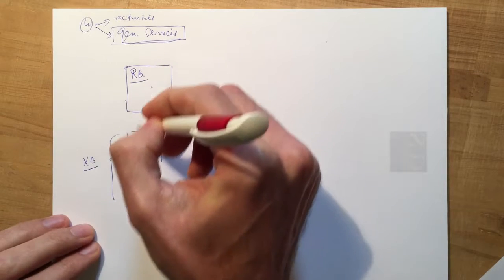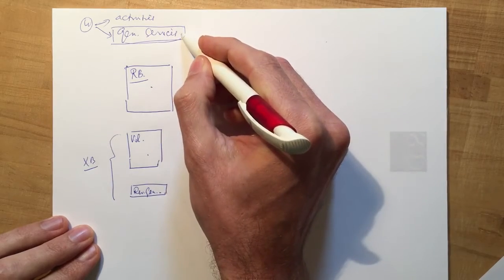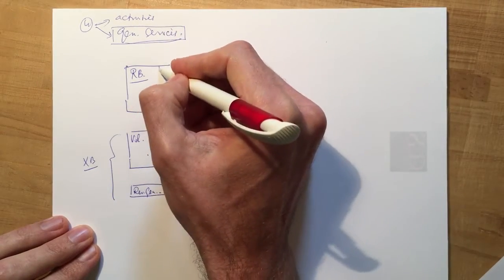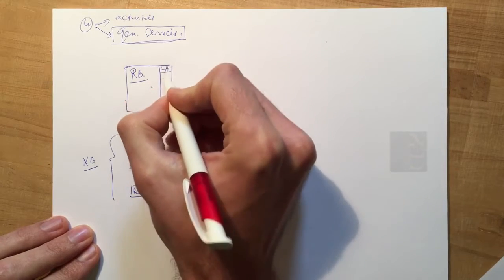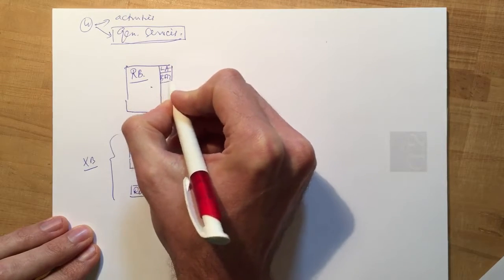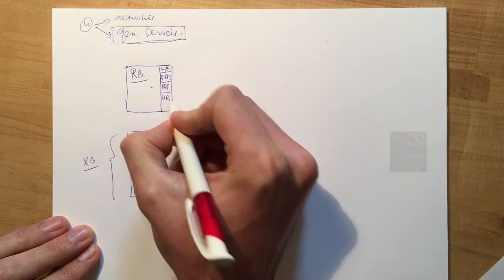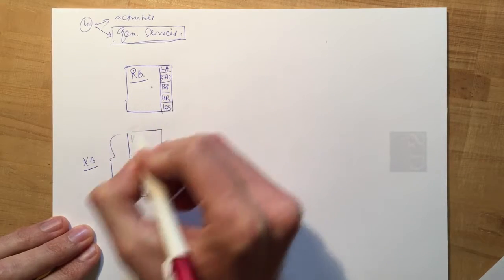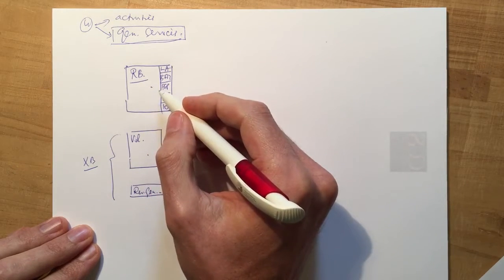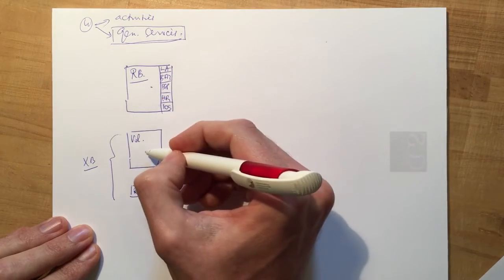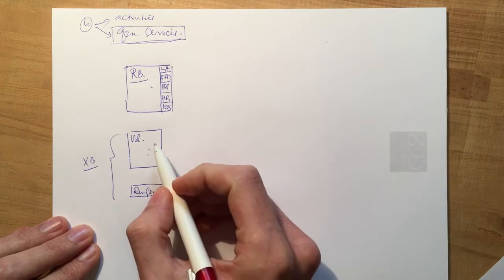Each of these three sources of income contribute to paying the general services, but in different ways. The regular budget directly pays a portion to general services, such as the legal advisor, the Bureau of Financial Management, the Bureau of Strategic Planning, the Human Resources Department, or the internal oversight services which makes evaluations and performs audits. The rest goes to programs.